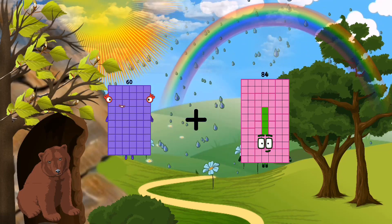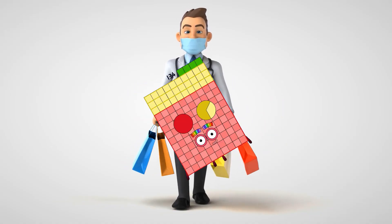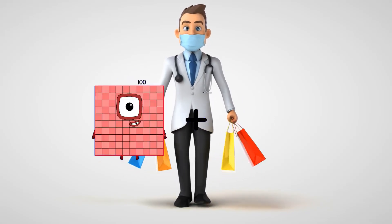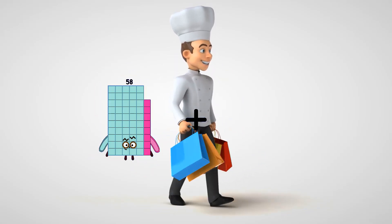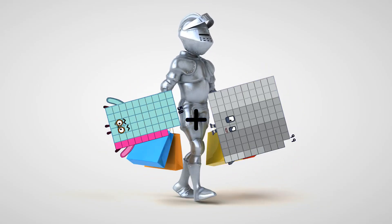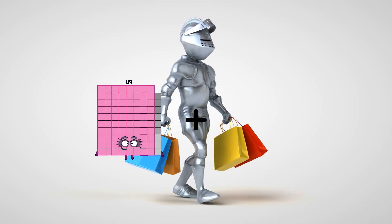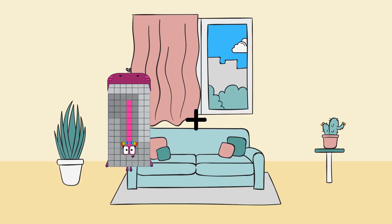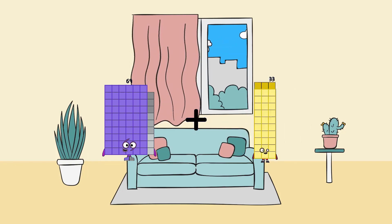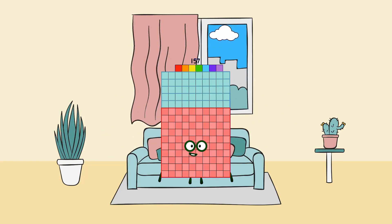60 plus 74 equals 134. 58 plus 99 equals 157. 69 plus 88 equals 157.